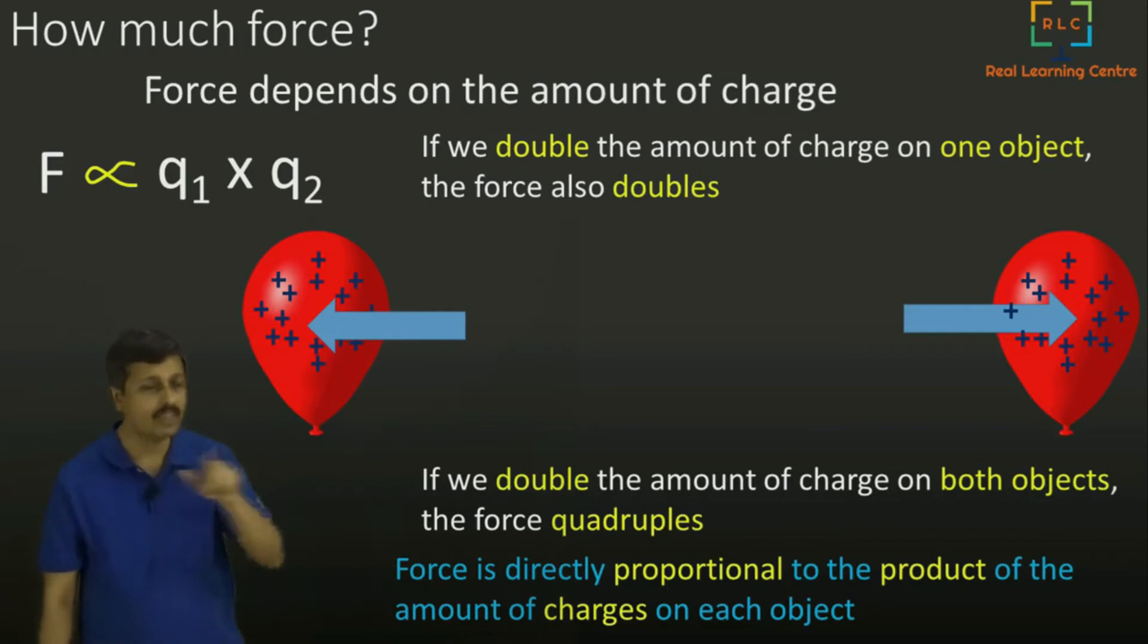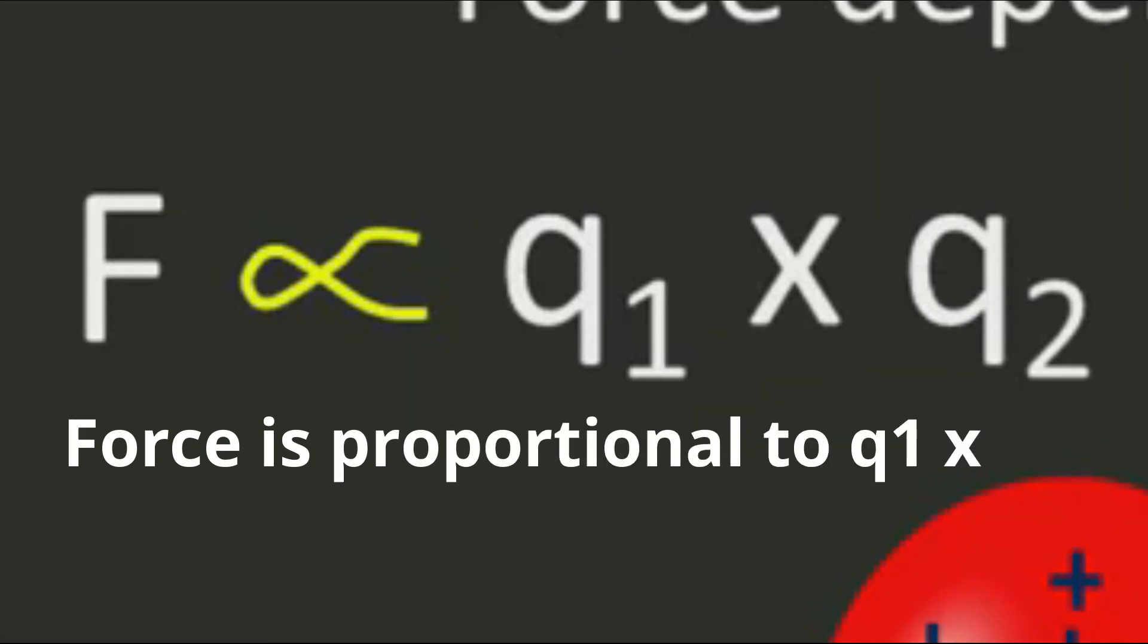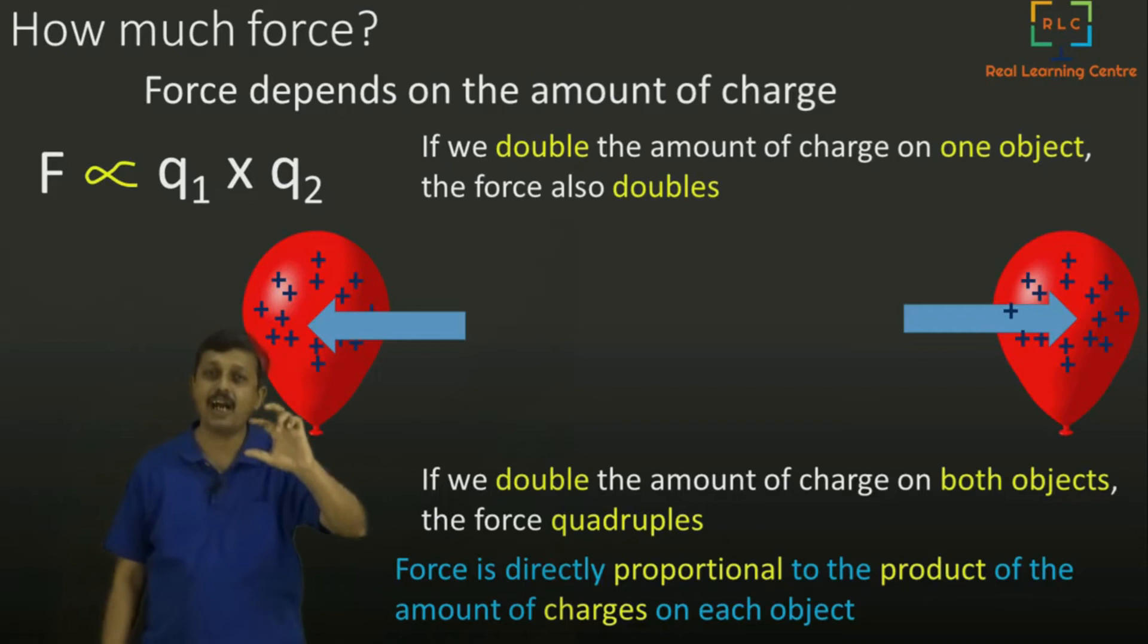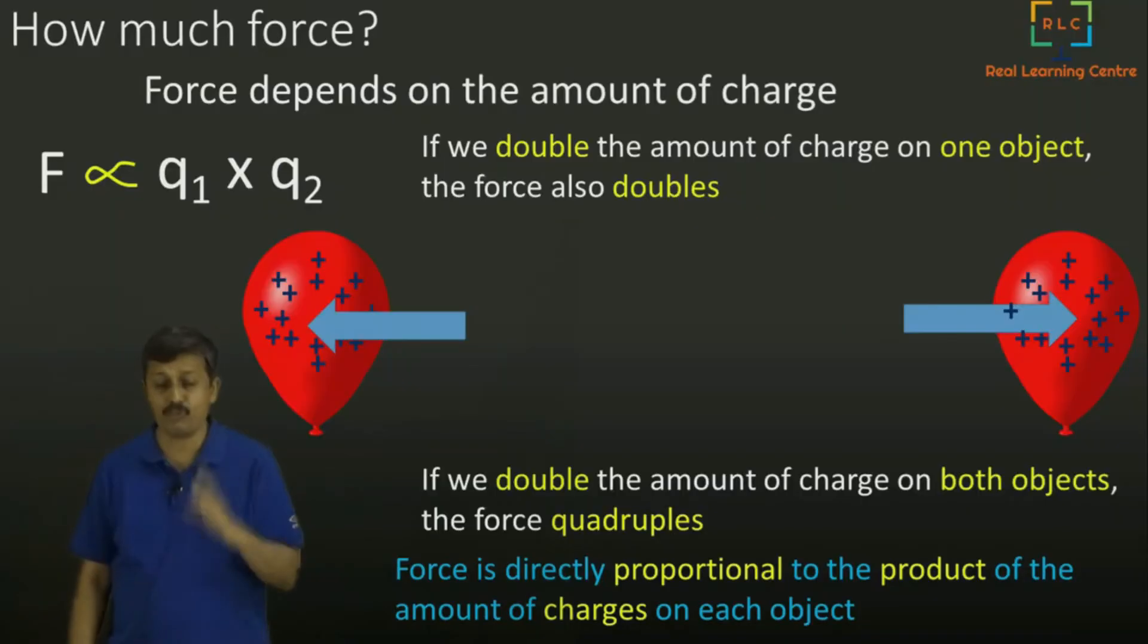So now before moving forward, we will write it in our mathematical language. So we say force is proportional to Q1 into Q2. We always give charge the letter Q. For some obscure reasons, we didn't give charge C, we gave it as Q. Q1 is charge 1, Q2 is charge 2.